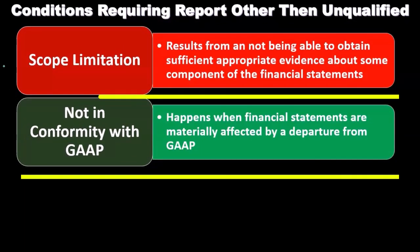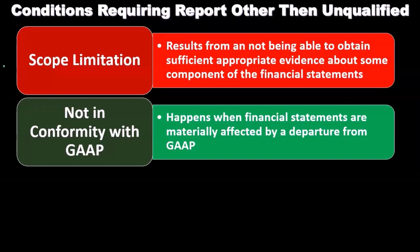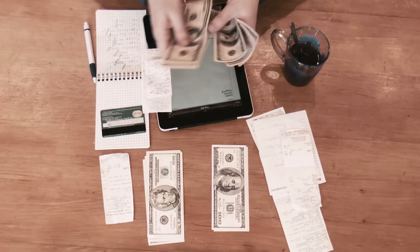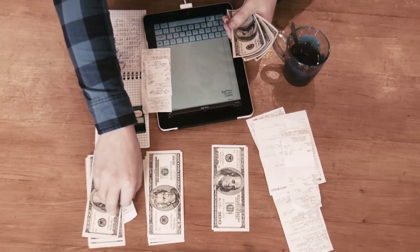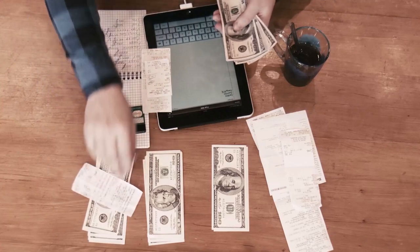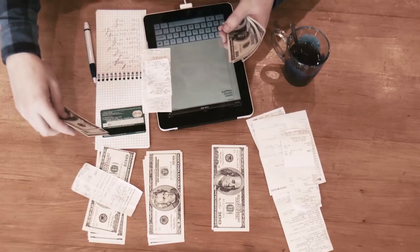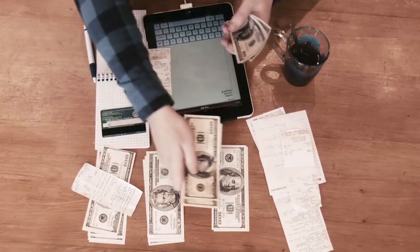Not in conformity with generally accepted accounting principles happens when financial statements are materially affected by a departure from GAAP. Our main task is giving an opinion as to whether the financial statements are in conformity with generally accepted accounting principles, and if there's a significant departure from them, that could result in us issuing some type of modified opinion.